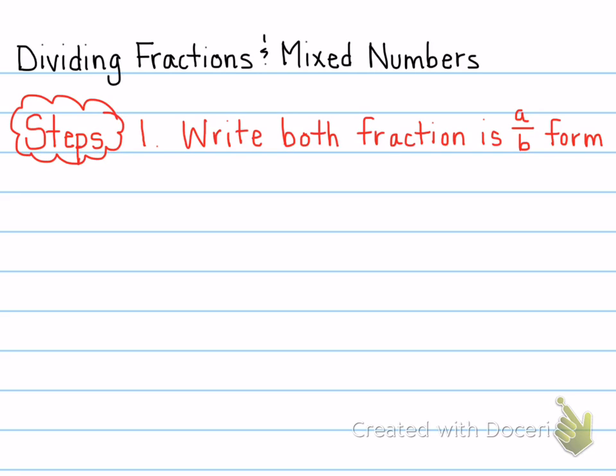So the first step is exactly the same as multiplying fractions. You're going to write both fractions in A over B form. So that means we cannot have mixed numbers or even whole numbers when we're dividing fractions.